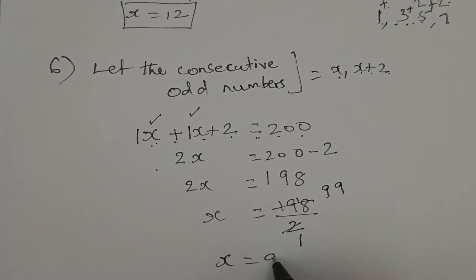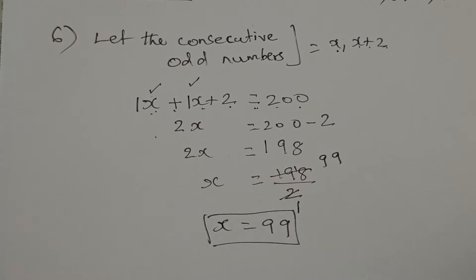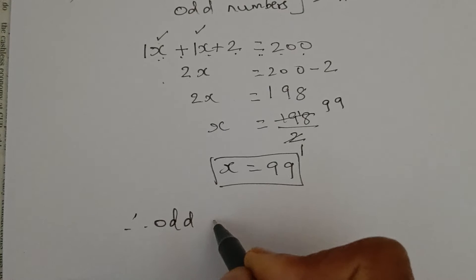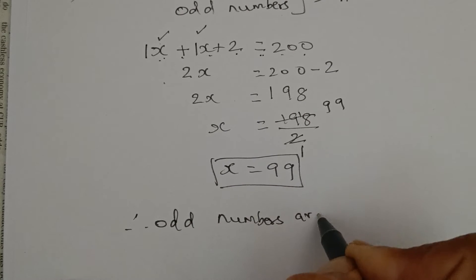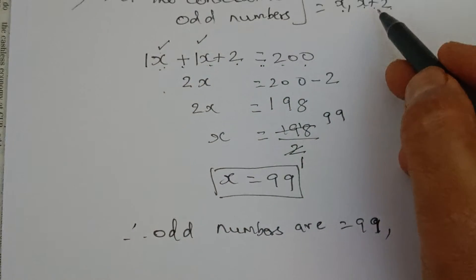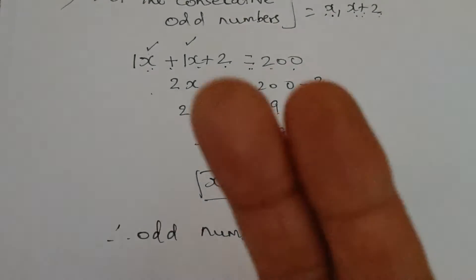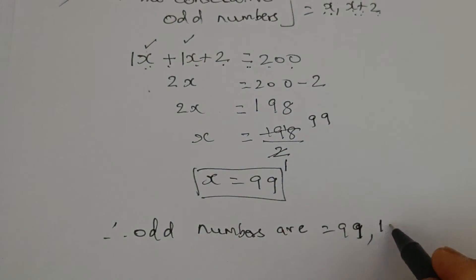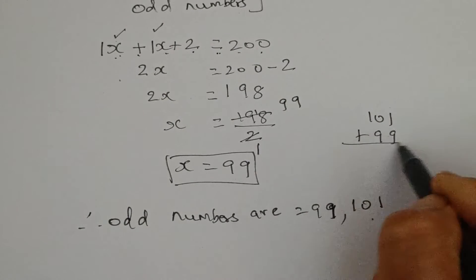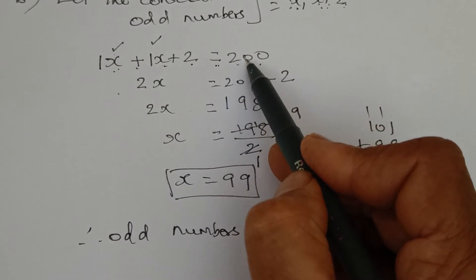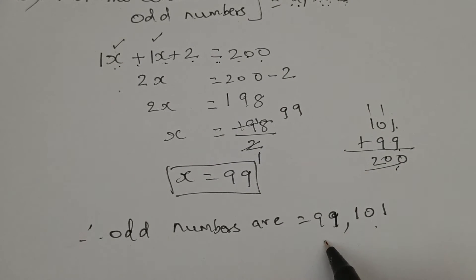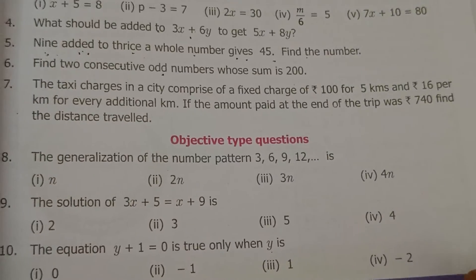So x = 99. Is 99 an odd number? Numbers ending in 1, 3, 5, 7, or 9 are odd — so yes, 99 is odd. Therefore the two consecutive odd numbers are: first number = 99, and the next number = 99 + 2 = 101. We can verify: 101 + 99 = 200. We are getting the sum as 200, so the answer is 99 and 101.